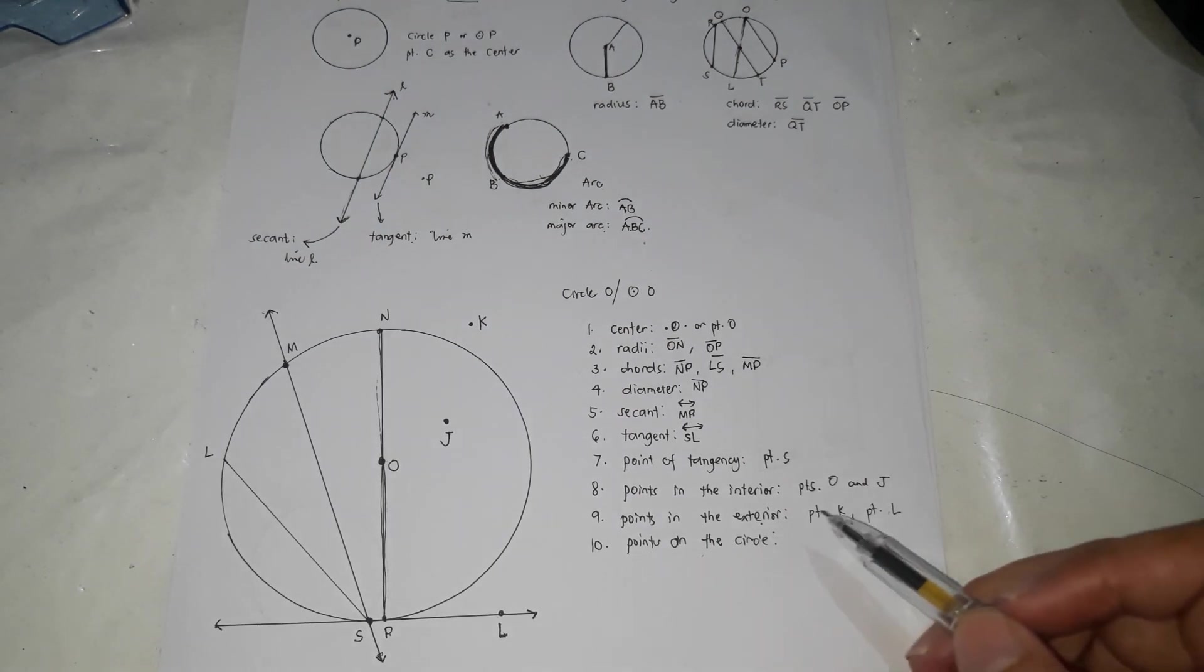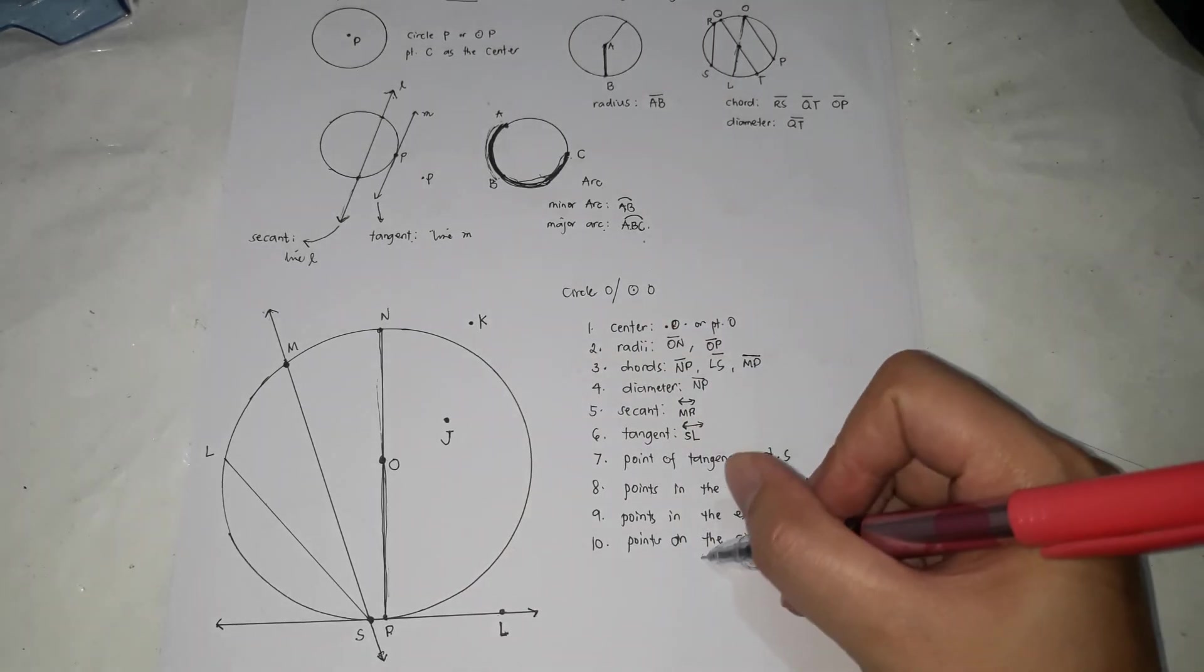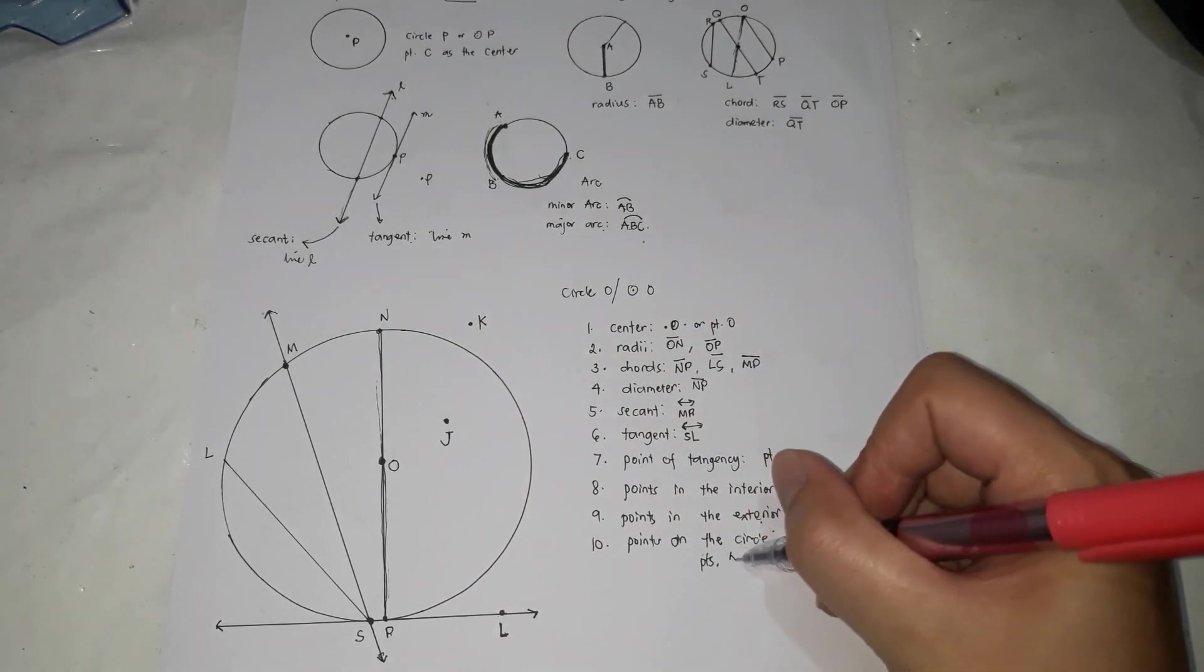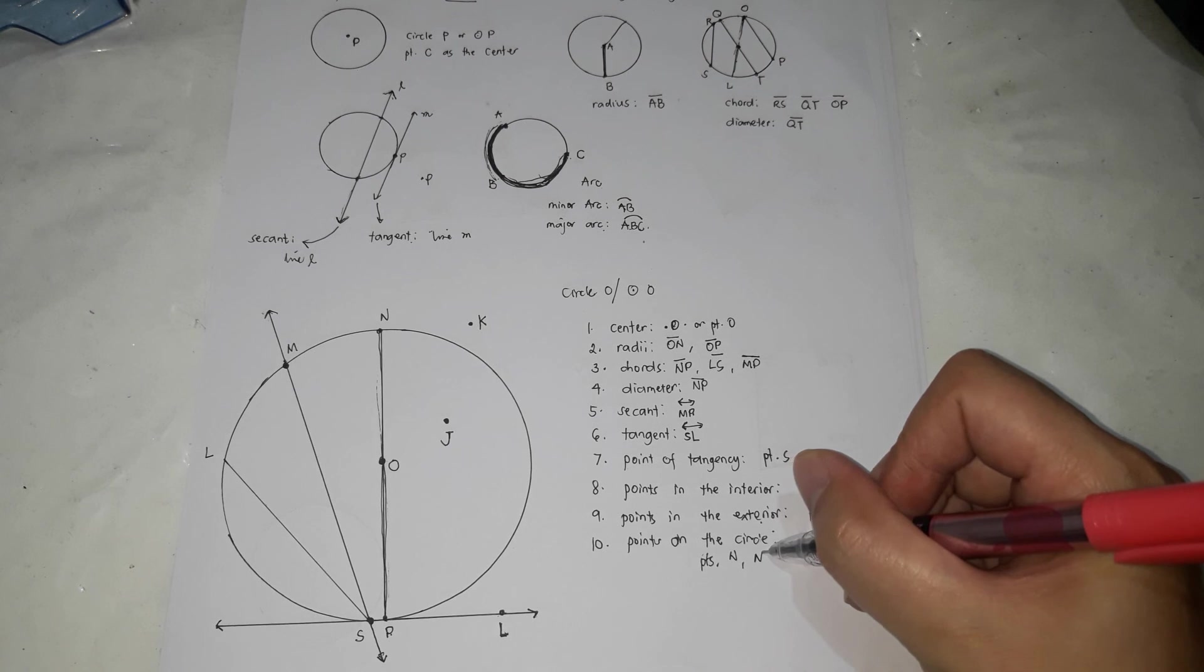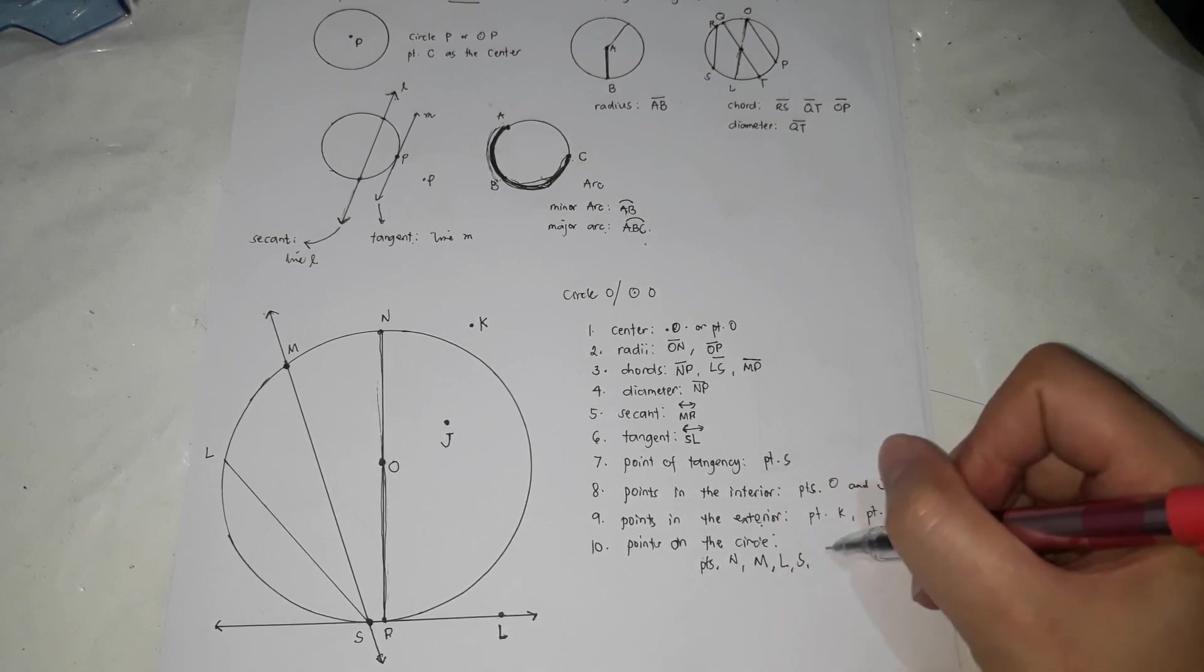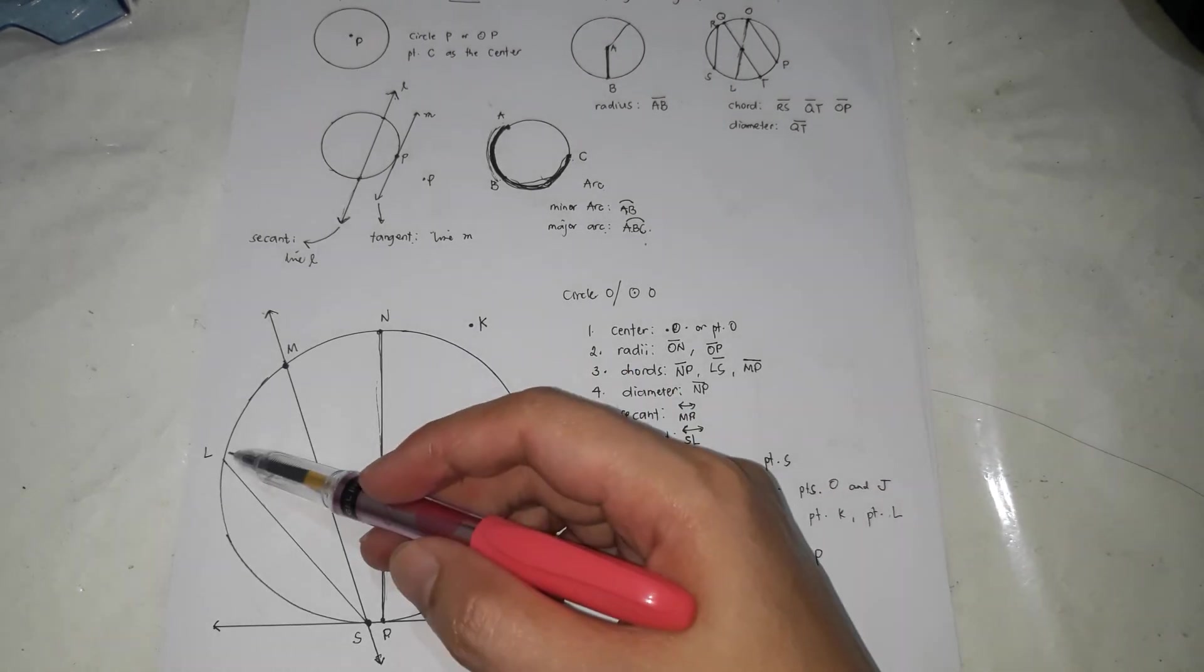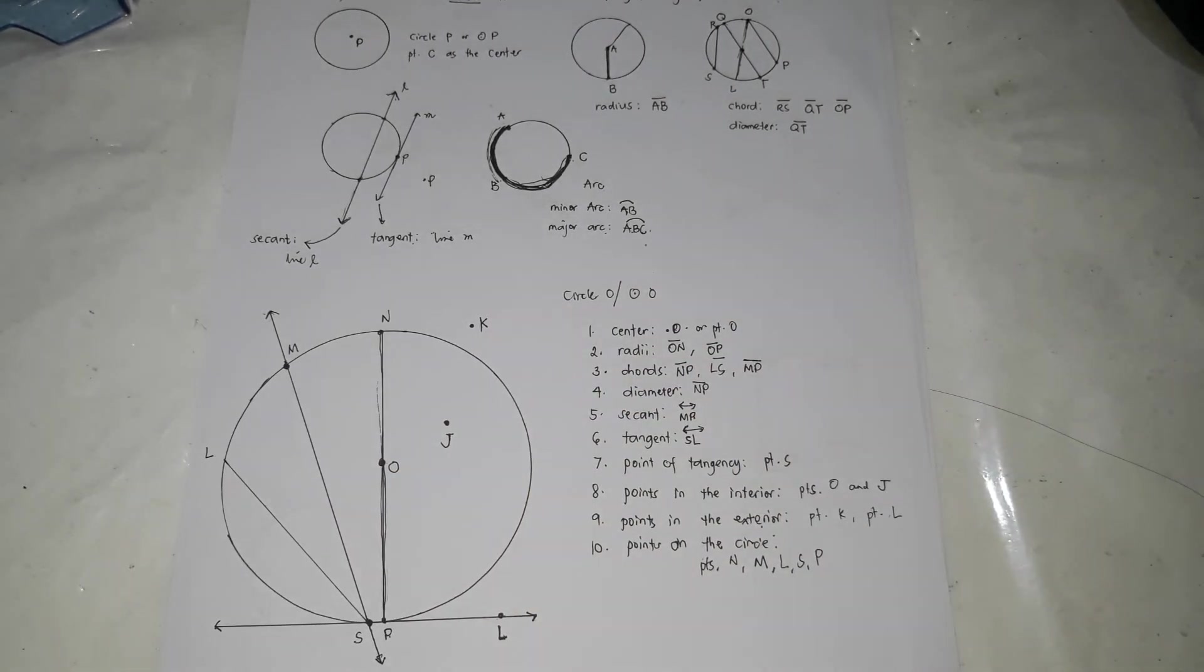Points on the circle. What are the points on the circle? This is the circle. So the points there are points N, M, L, S, and P. So P, S, L, M, and N are the points on the circle. That ends our discussion on circle. Thank you.